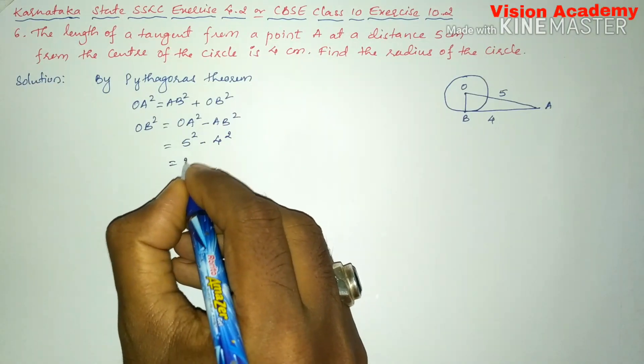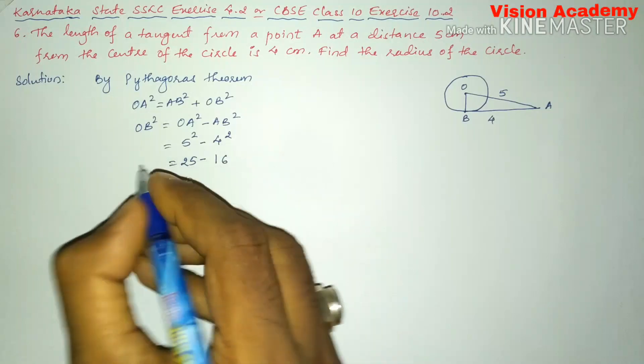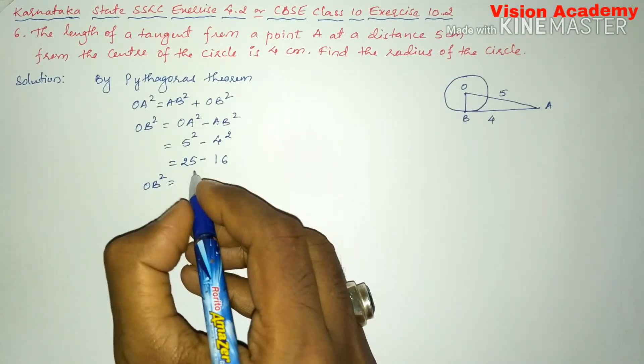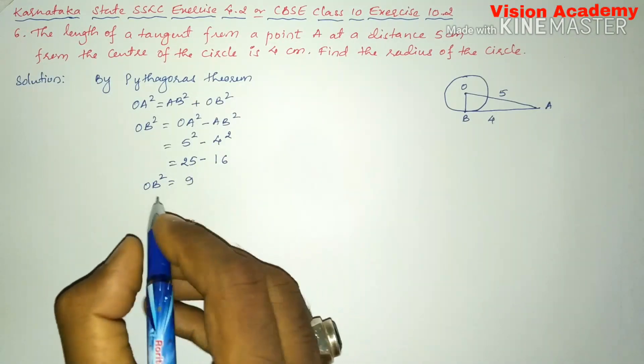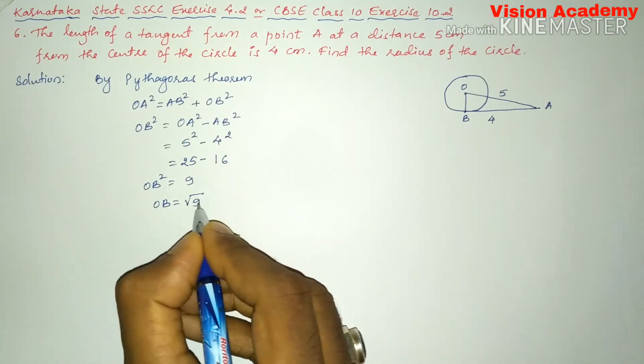Here, 5 square is 5 times 5 is 25 minus 4 times 4 is 16. Now, OB square is equal to 25 minus 16 is 9, and transform this square from LHS to RHS. It will become OB is equal to square root of 9.